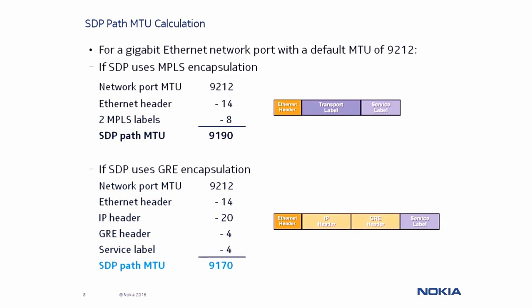Also keep in mind that when performing these calculations, you must consider any other factors that increase the encapsulation overhead. For example, Facility Backup or LDP over RSVP each require an additional MPLS label. So if both are used together on the same LSP, you would need to add an additional 8 bytes of encapsulation overhead.